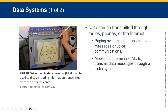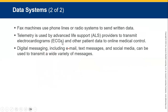Data can be transmitted through radios, phones, or the internet. Paging systems — in the old days, we used to have pagers that came up with messages we had to phone in; they sent messages across the airways giving us numbers and data information. Mobile data terminals, like a tablet, can also be used to send messages through a radio system. Fax machines used telephone lines but are pretty much obsolete now. Telemetry is used by advanced life support providers to transmit ECGs and other patient information to online medical control. Digital messages, including email, text messages, and social media, can be transmitted via a wide variety of means.